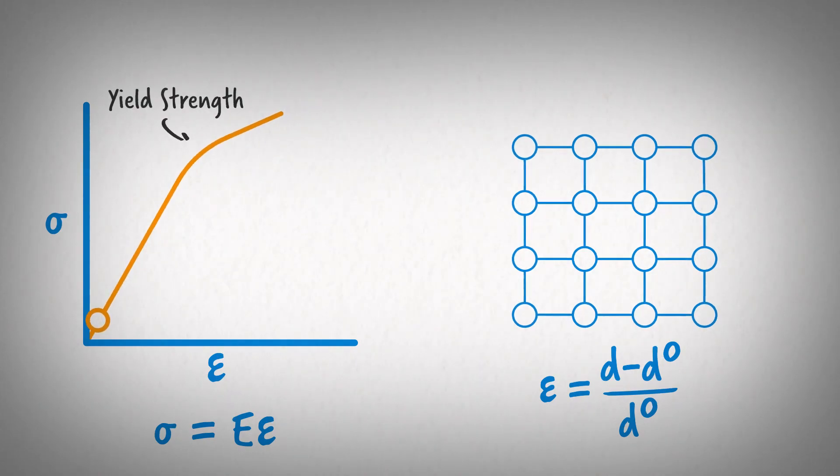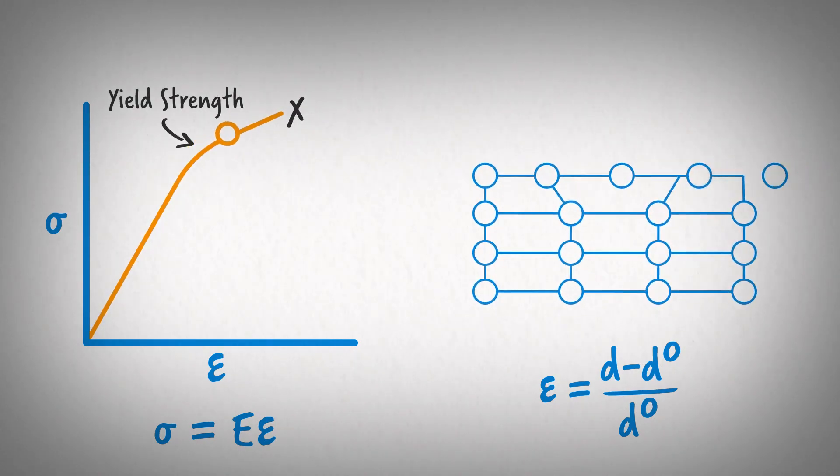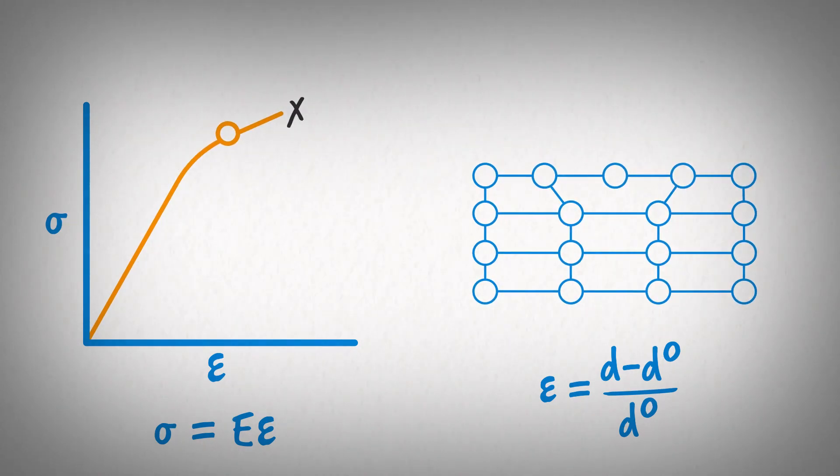If the material is stretched even further, the yield strength is reached and the atomic bonds will begin to break, forming defects in the crystal structure called dislocations. Once yield strength is reached, much more force is required to deform the material any further.